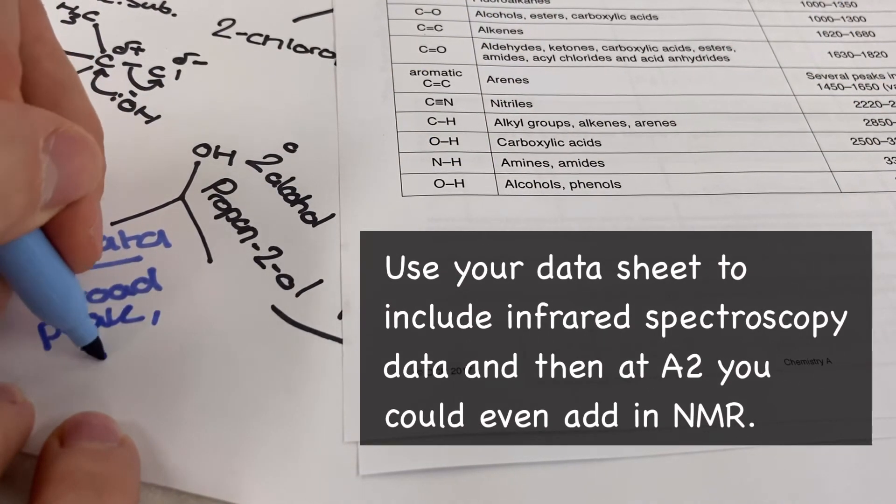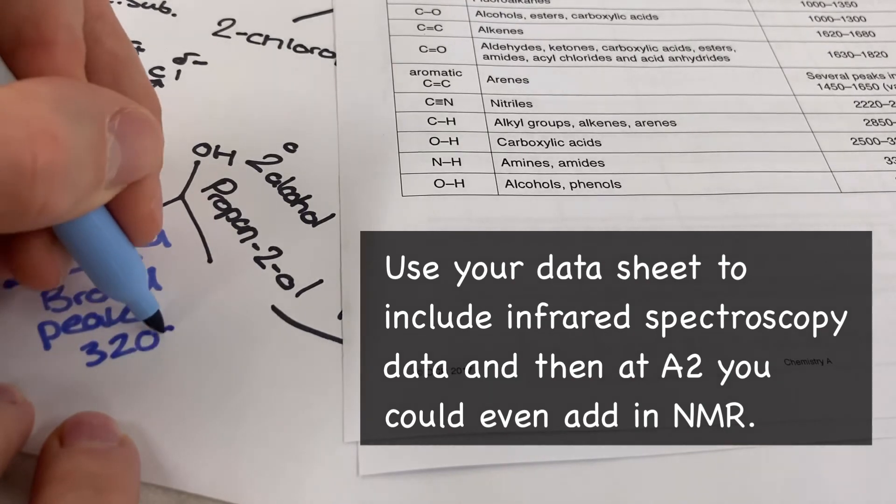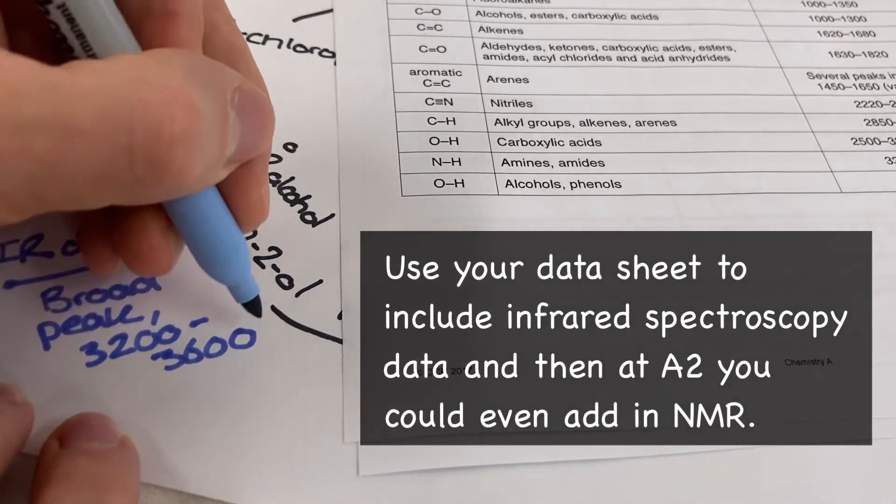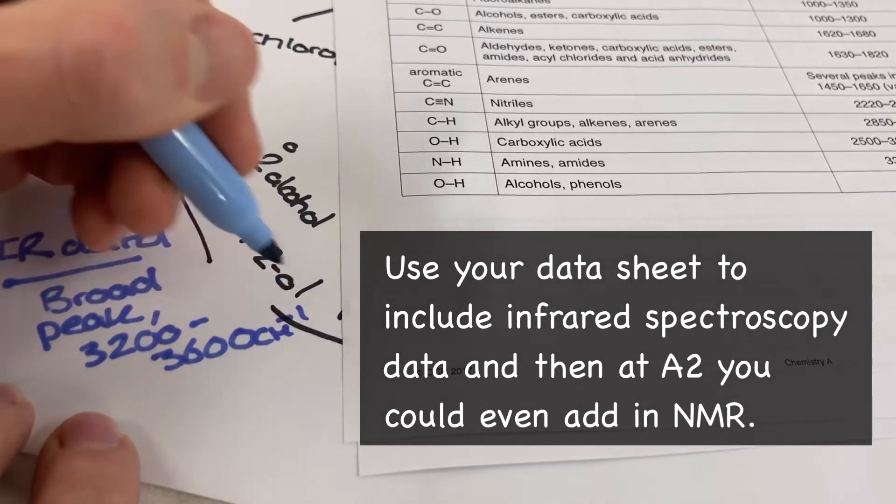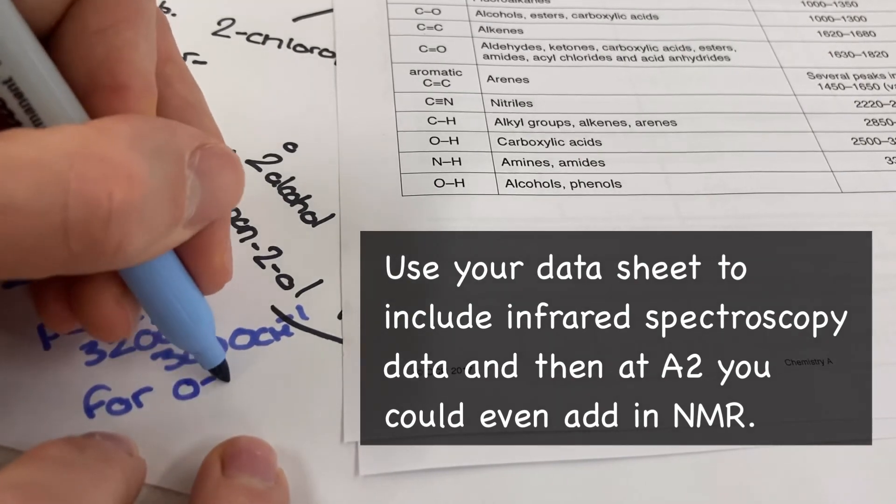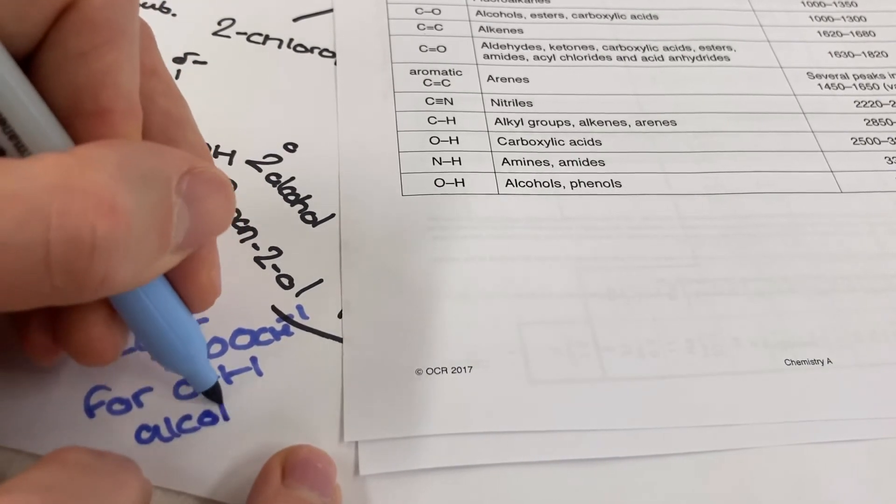I suppose the icing on the cake for these diagrams once you're getting near the end of them is for you to add in spectroscopy information. Infrared spectroscopy should always be done using your data sheet and nuclear magnetic resonance spectroscopy will require you to leave a lot of space when constructing your diagram.